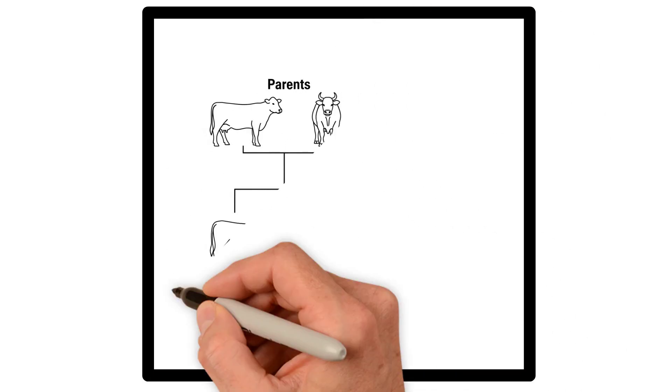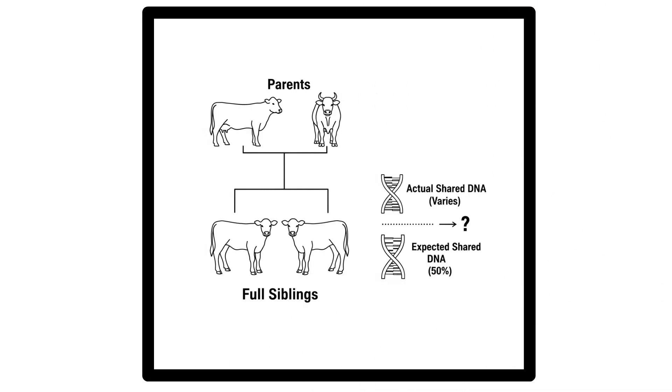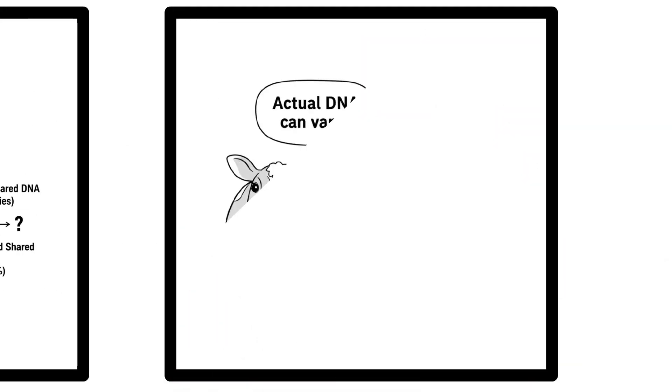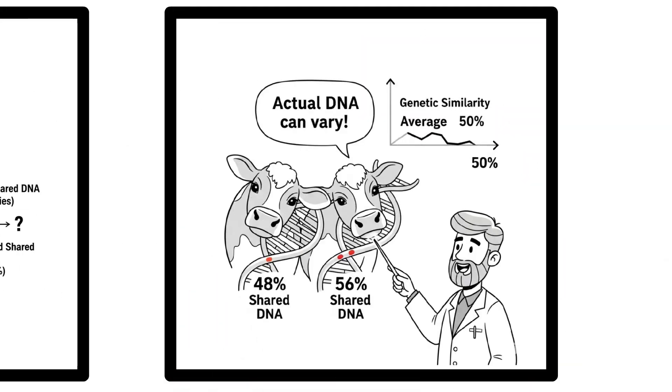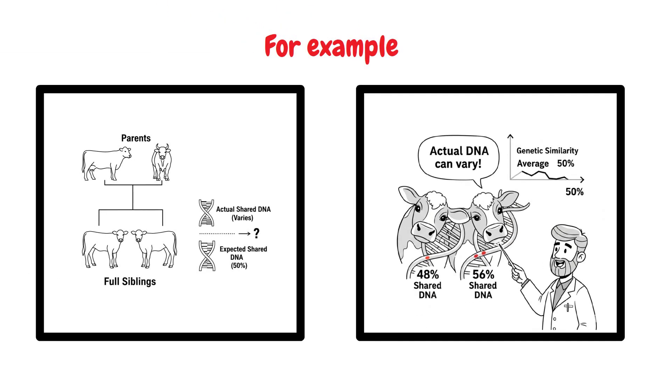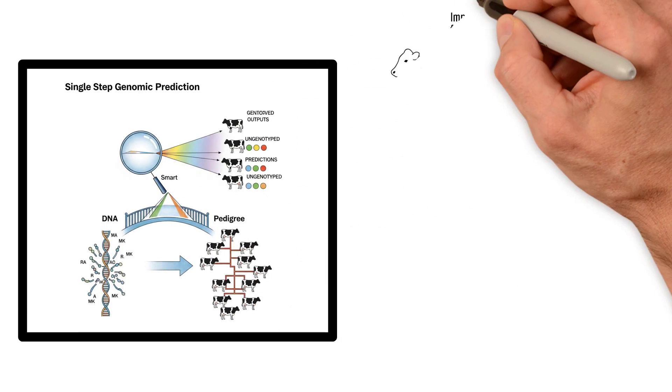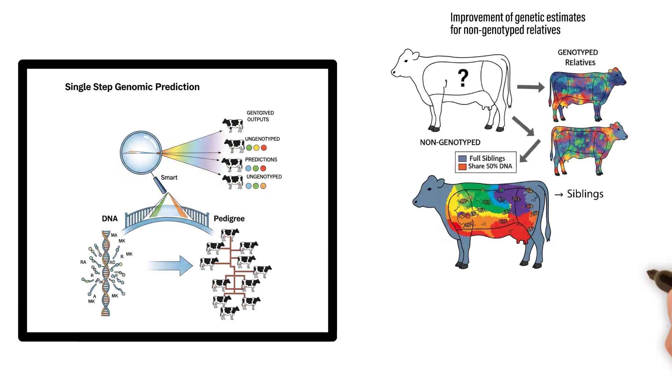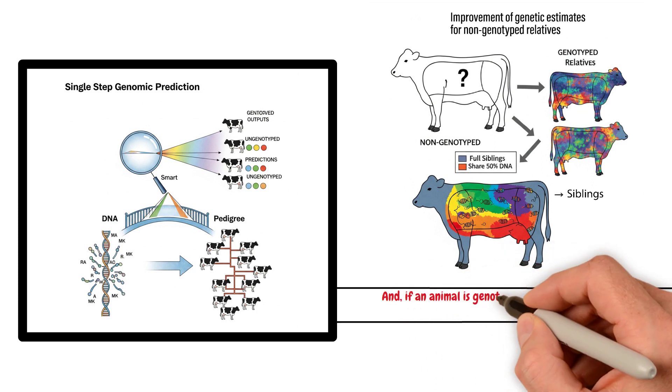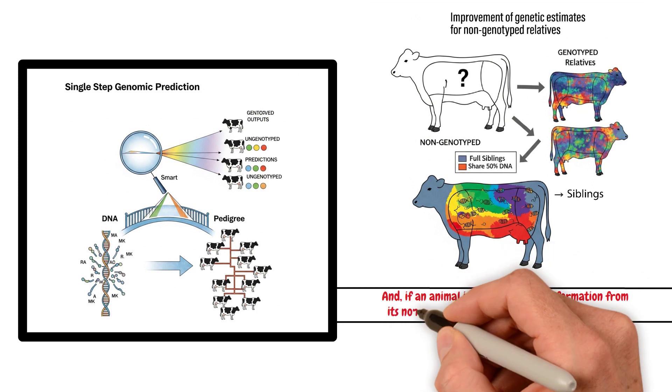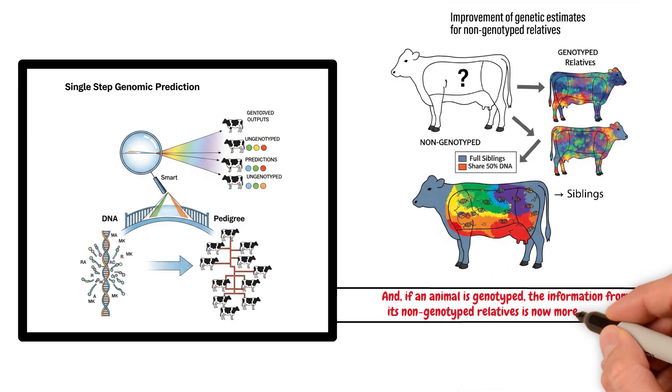For example, based on pedigree, we assume that full siblings share 50% of their DNA. However, when we look at the DNA, we know that this is an average, and siblings can in reality have more or less genetic similarity. With single-step, if an animal or its relatives have genotypes, we can use that DNA information to improve the estimate for the non-genotyped animals. And if an animal is genotyped, the information from its non-genotyped relatives is now more accurate.